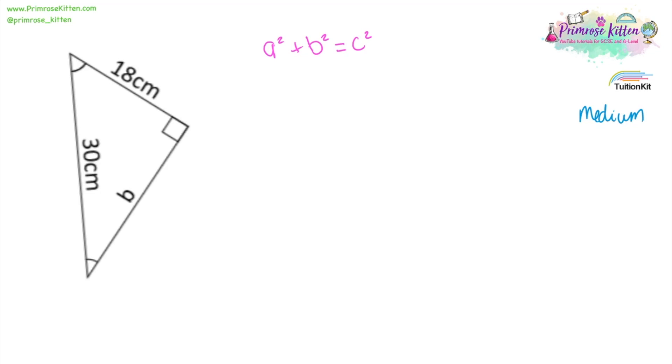Here we have the same sort of thing going on with our hypotenuse and our A. Again, I'm going to put the numbers in first. So 18 squared plus B squared equals 30 squared. 324 plus B squared equals 900. B squared equals 900 minus 324, which is 576. The square root of 576 is 24.